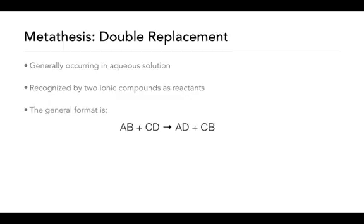The general format is going to look like this, where AB is an ionic compound, CD is another ionic compound. You're going to produce the ionic compound AD and CB.